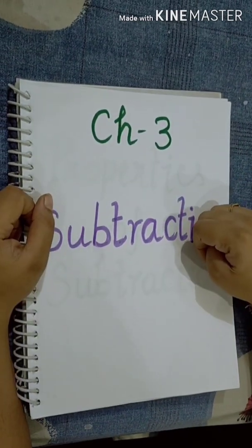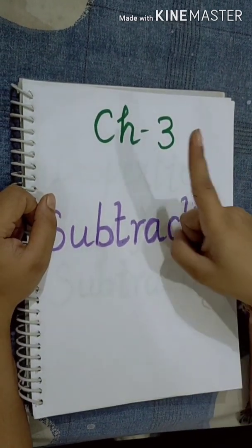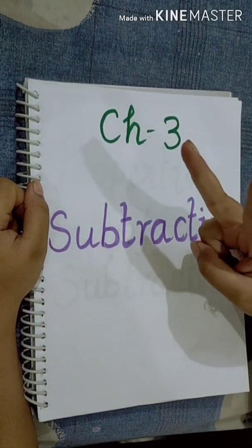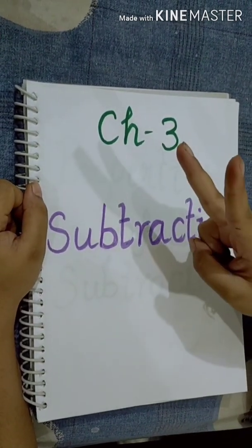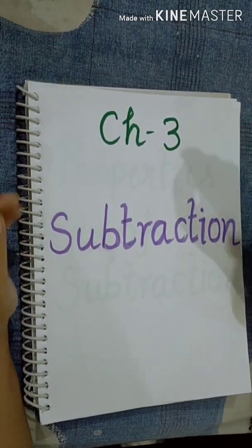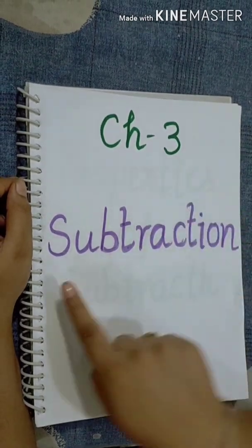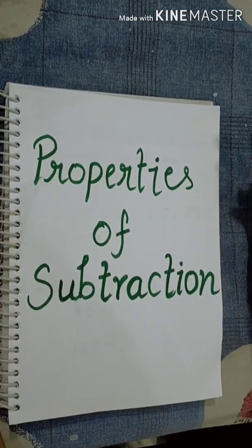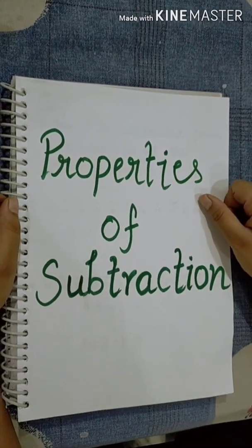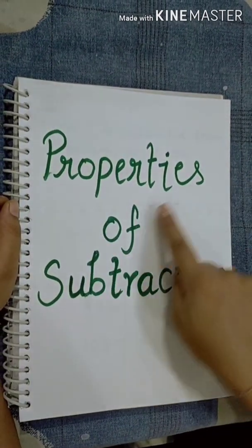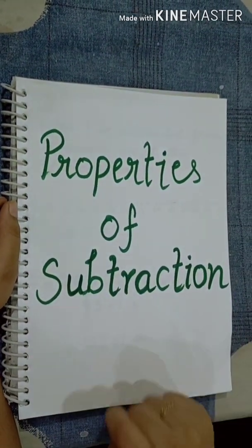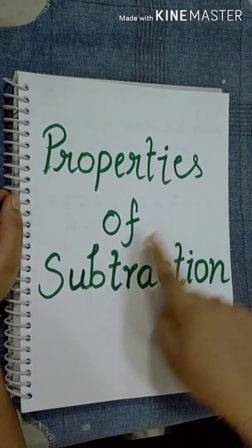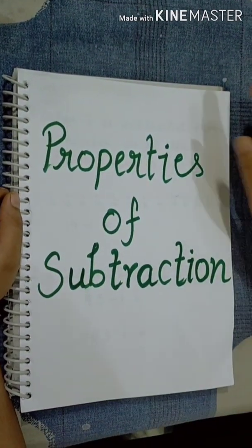Before vacation, we have done Chapter 1 — numbers up to 200 — and Chapter 2 — addition. So now we have to start Chapter 3, subtraction. I will start this chapter from properties of subtraction. So we will learn today about properties of subtraction.